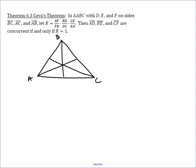You have triangle A, B, C, and then you have three cevians drawn in, and they all intersect in the middle at a single point. If they intersect at a single point, then the ratios — it doesn't matter the order you do these in. All that matters is that you go either clockwise or counterclockwise. So if you start with the segment closest to A for the first ratio, then closest to B for the second, and closest to C for the third. This gives AE over EC equals CD over DB equals BF over FA.